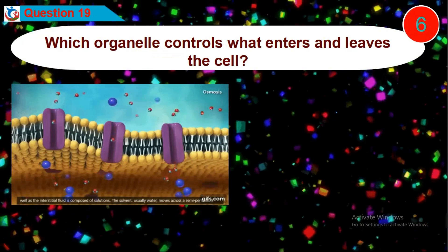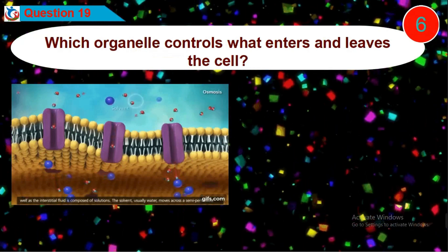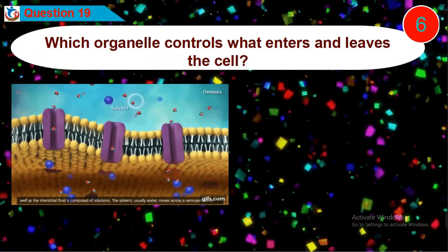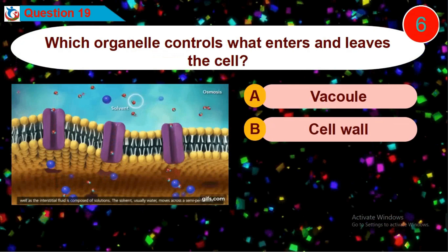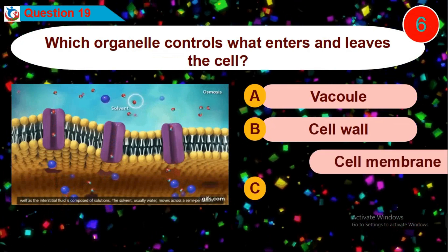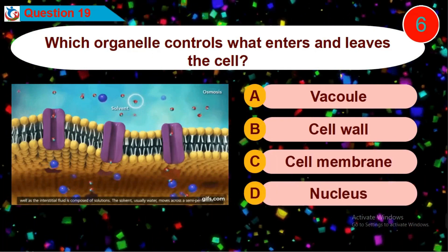Question 19: Which organelle controls what enters and leaves the cell? Is it option A, B, C, or D?